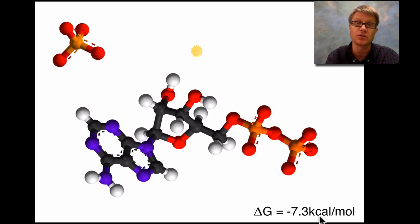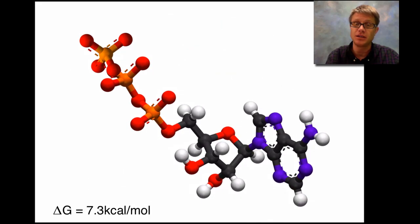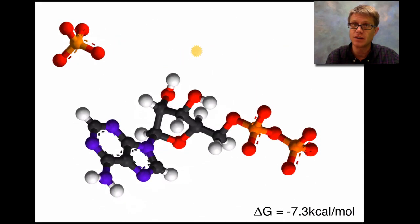If we go back to ATP from ADP, that's going to be a positive delta G. If we break the phosphate, negative. If we form the phosphate, that's going to be positive.